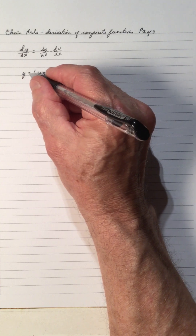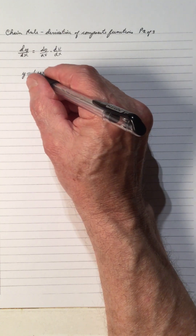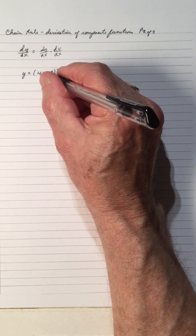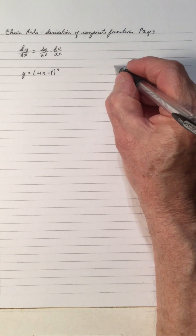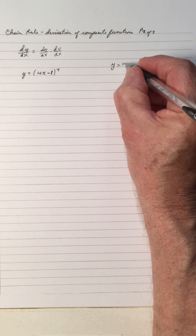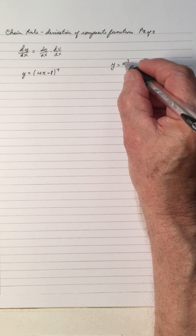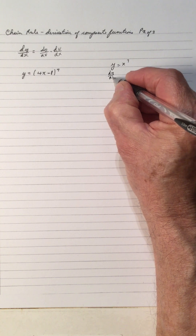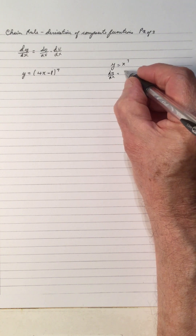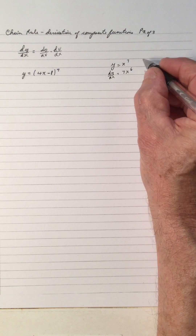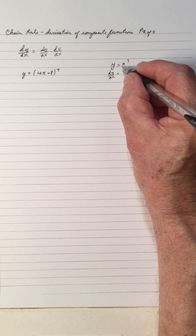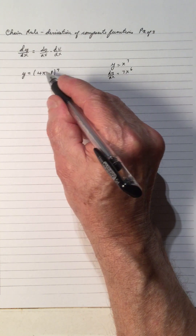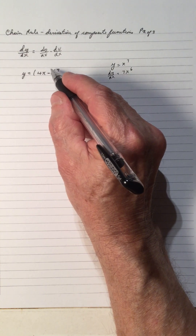In previous videos on derivatives, we did the derivative of y in terms of x. For example, y equals x to the 7 — there's just an x here, so dy/dx is 7x to the 6. But now we have 4x minus 1 inside, so let's look at how we're going to handle this.